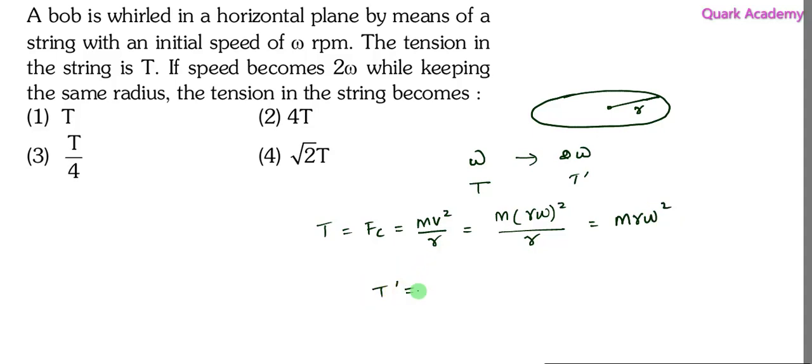Now in the second case, omega becomes omega dash, so omega dash is 2 omega. Here mass is constant, radius is constant, only angular speed is changing. Omega dash squared, so this can be written as m r times 2 omega whole squared.